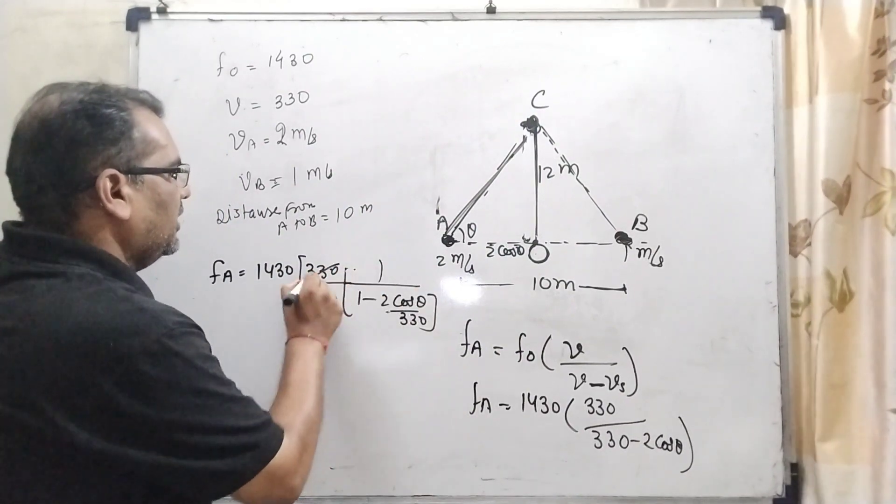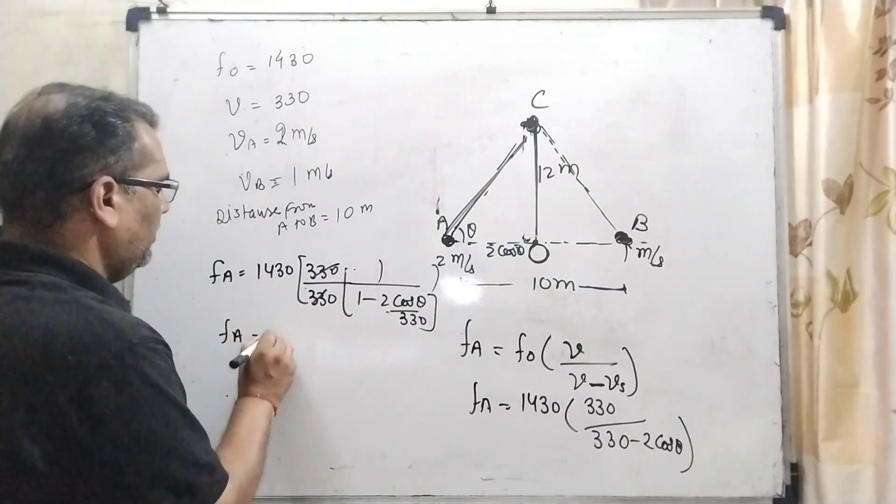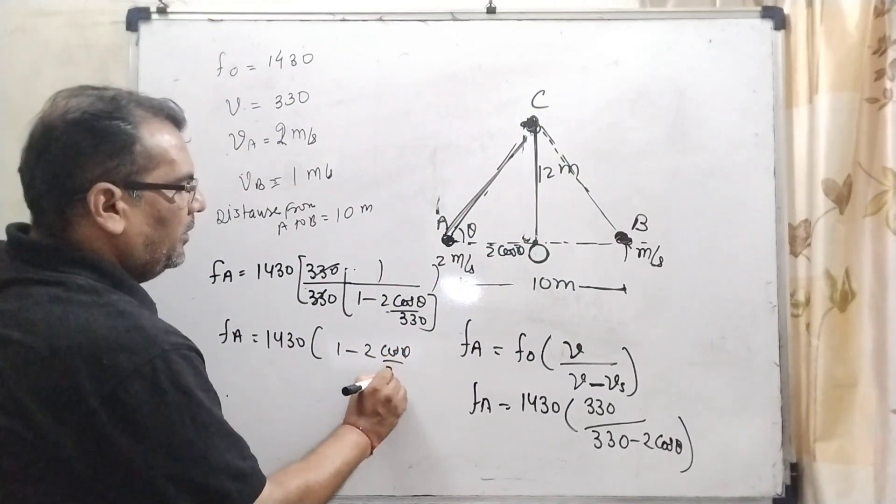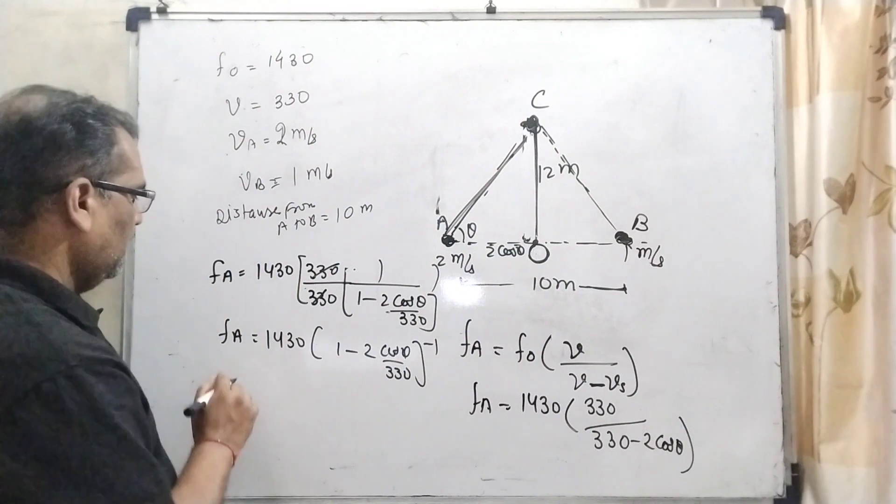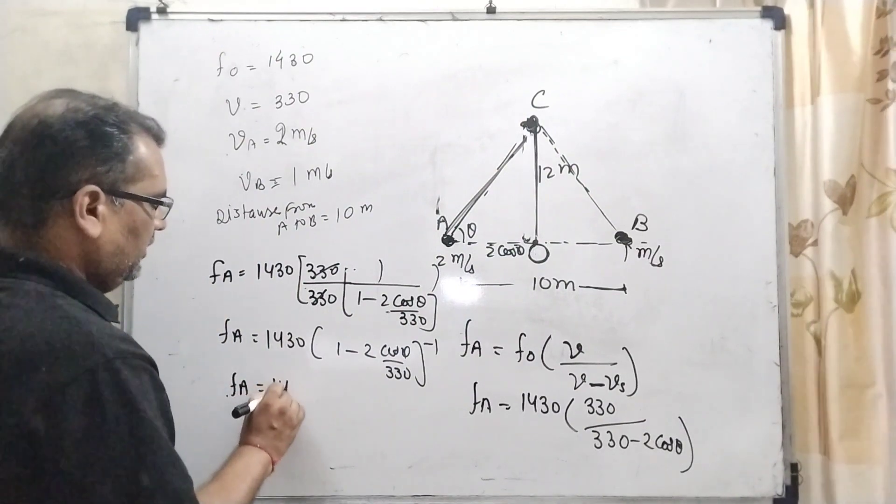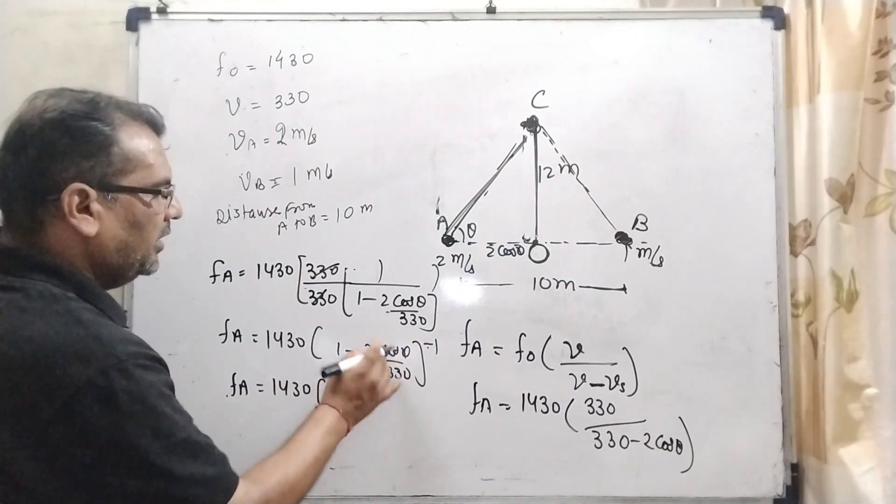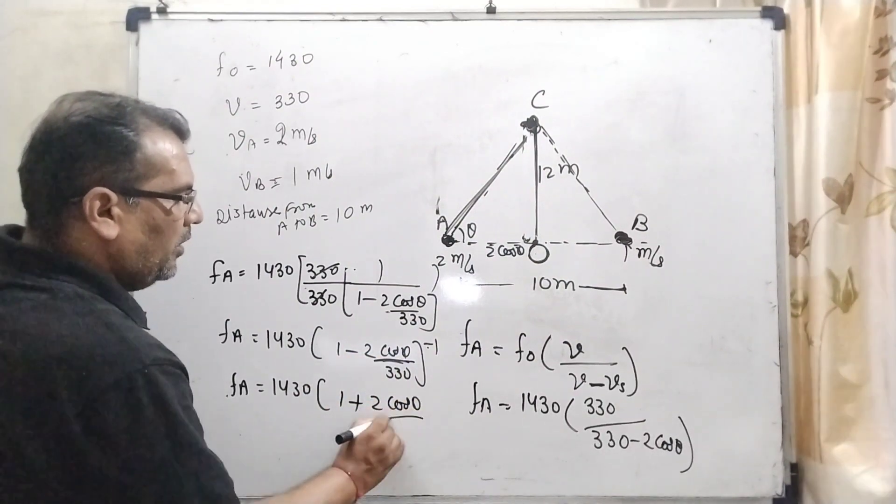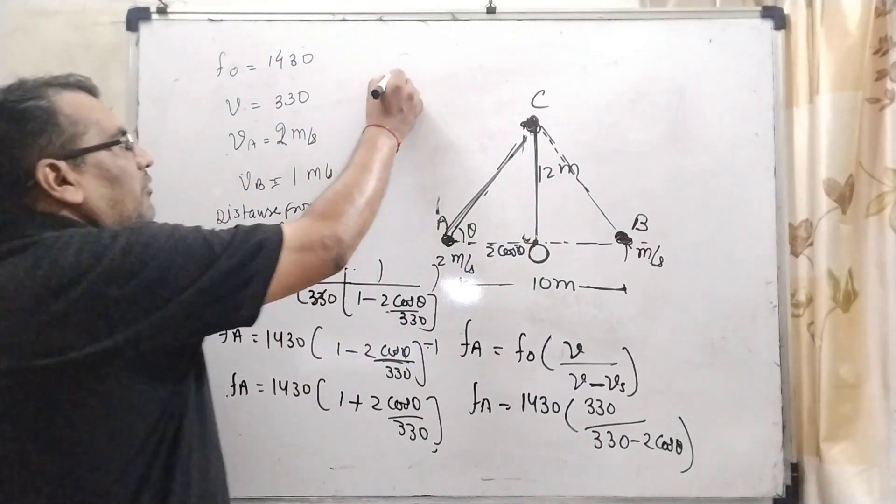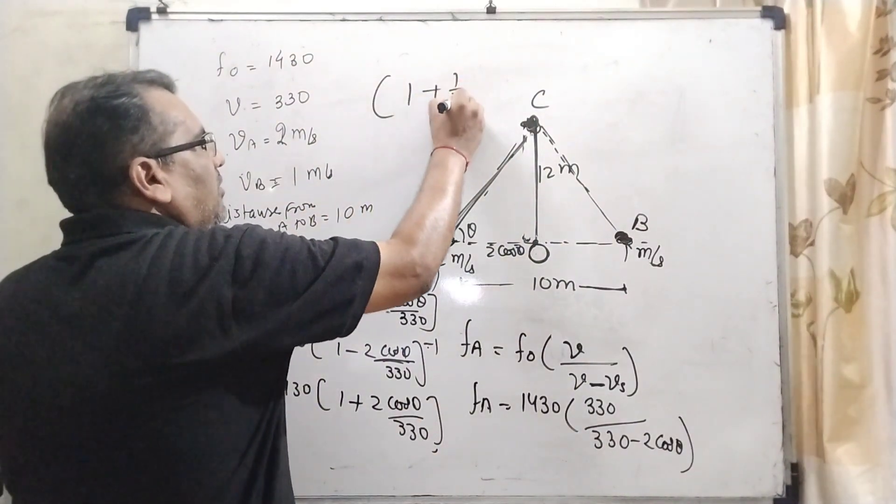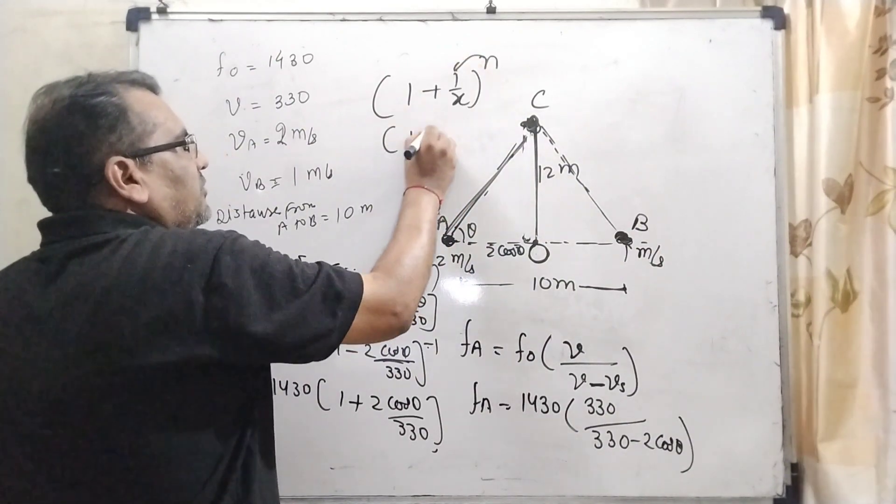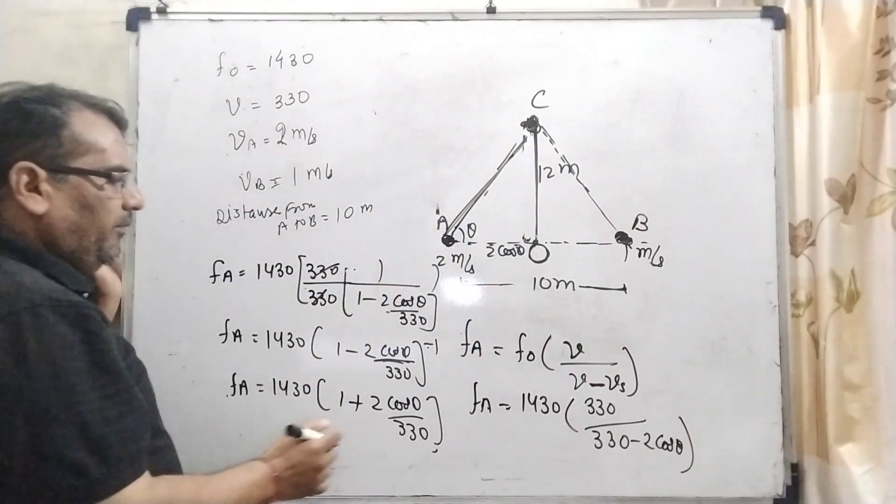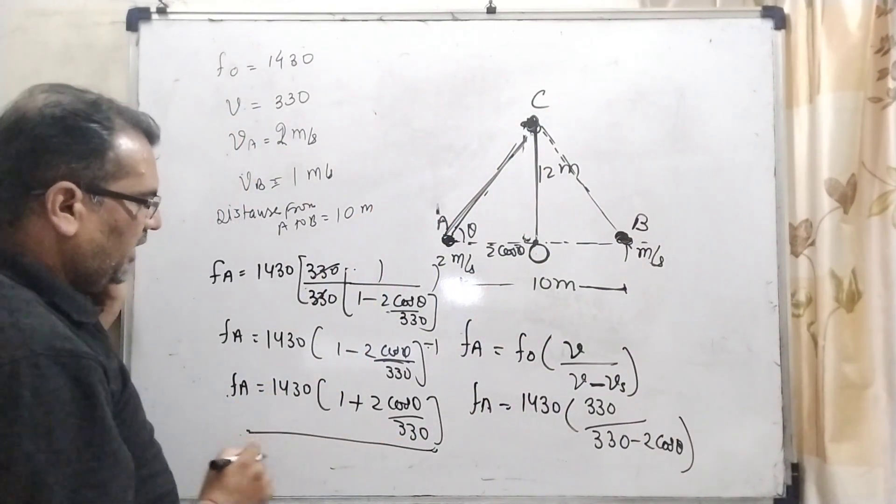After 330 cancels out, using binomial theorem: 1430 × [1 - (2 cos θ / 330)]⁻¹. Then, using binomial theorem with power minus 1 multiplied to this term, it becomes 1 + (2 cos θ / 330). Because you are well known that (1 + 1/x)ⁿ can be written as 1 + n/x. This is the concept of binomial theorem. So here we are applying the binomial theorem to get fₐ.